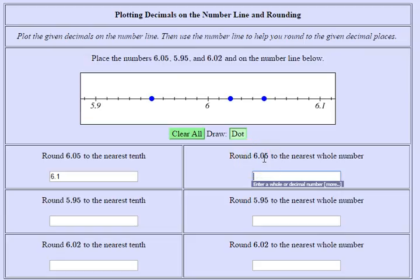Now we're going to round to the nearest whole number. Here's 6.05. We can see 6 as a whole number and 7 would be way over there somewhere. So it's definitely closer to 6.